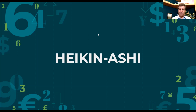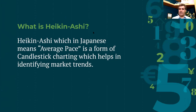A derivative of a candlestick is something called Heikin-Ashi. It is similar to candlesticks, but it gives you an added benefit if you're using a trend or basically a change of trend. Heikin-Ashi in Japanese means the average pace — sometimes it is translated as bar, but it's average pace. As I mentioned, it's a form of candlestick charting, and it helps with market trends. It's a cleaner, less noisy sibling of candlestick.